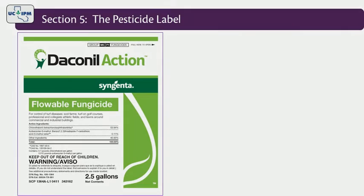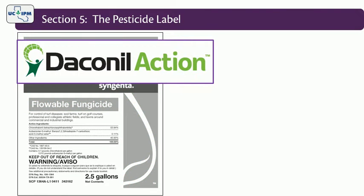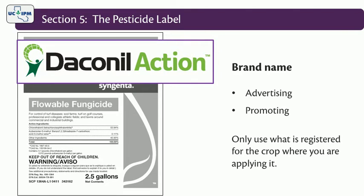Let's start with the brand name. A brand name is the name the manufacturer gives to the product — this is the name used for all advertising and promotion. Brand names are often similar, but the composition and concentration of the pesticide may vary. Therefore, always carefully check that you buy and use exactly the product that was recommended and registered for the crop where you intend to apply it.